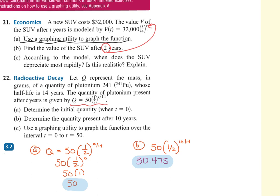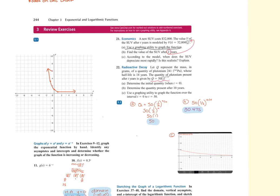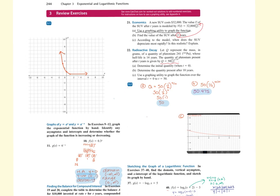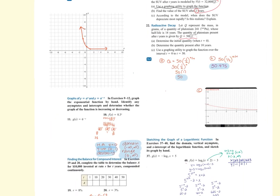And then 22, same. It gave you the model. It said to determine the initial quantity, so you'd be looking for where T equals zero. And then to determine the quantity present after 10 years, now you're plugging in 10. And then C says use the graphing utility to graph it over the interval, but you won't even need to graph it. You should just be able to plug it in. So you don't need a graphing utility for this one.